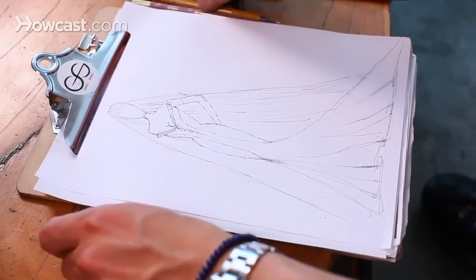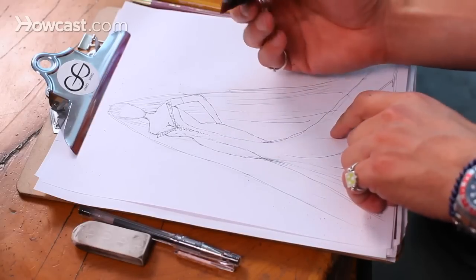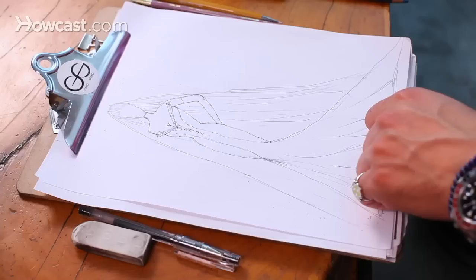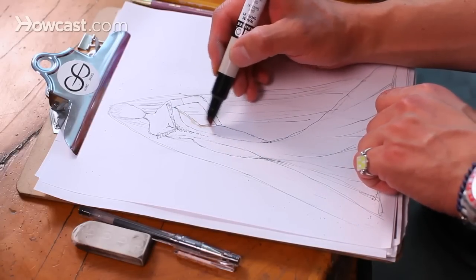All right, so the tricky thing about white with wedding gowns is you have to think about shading. And I use a very pale gray to create that, a pale warm gray.